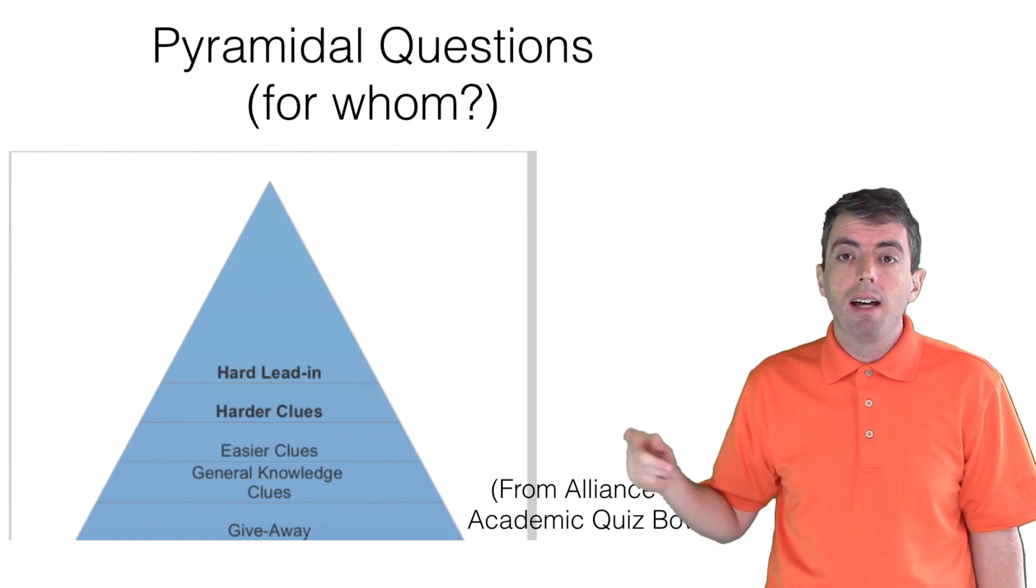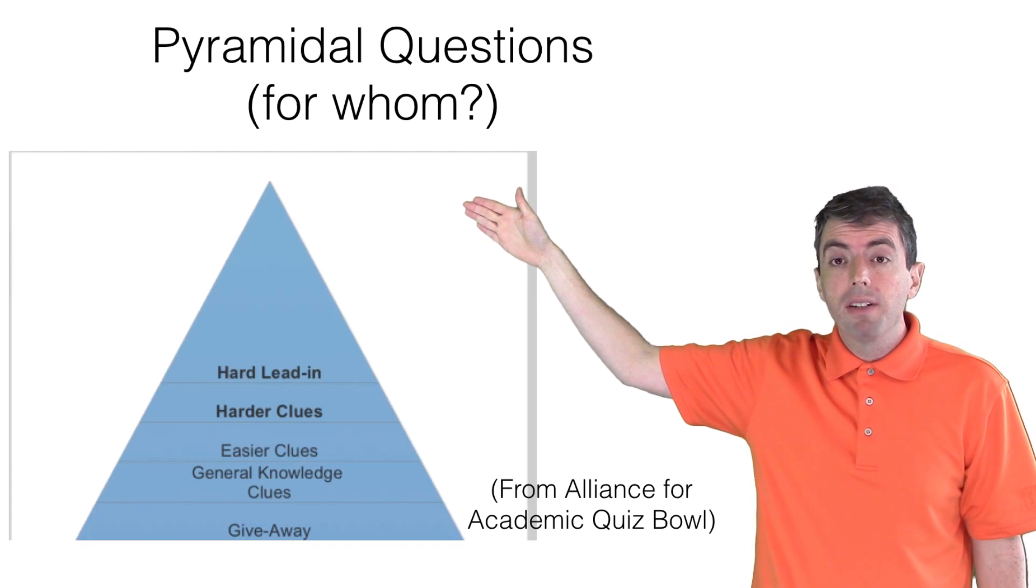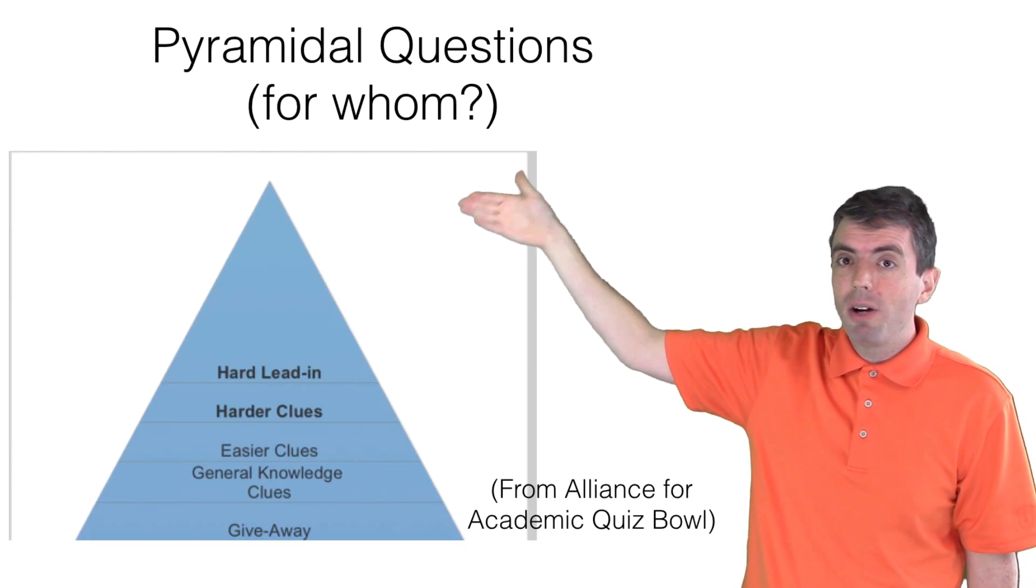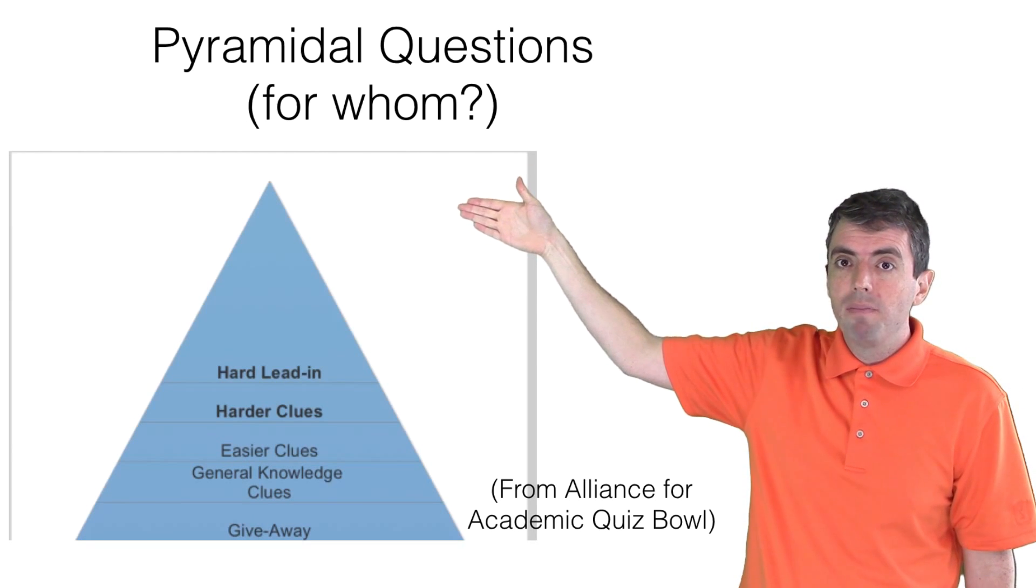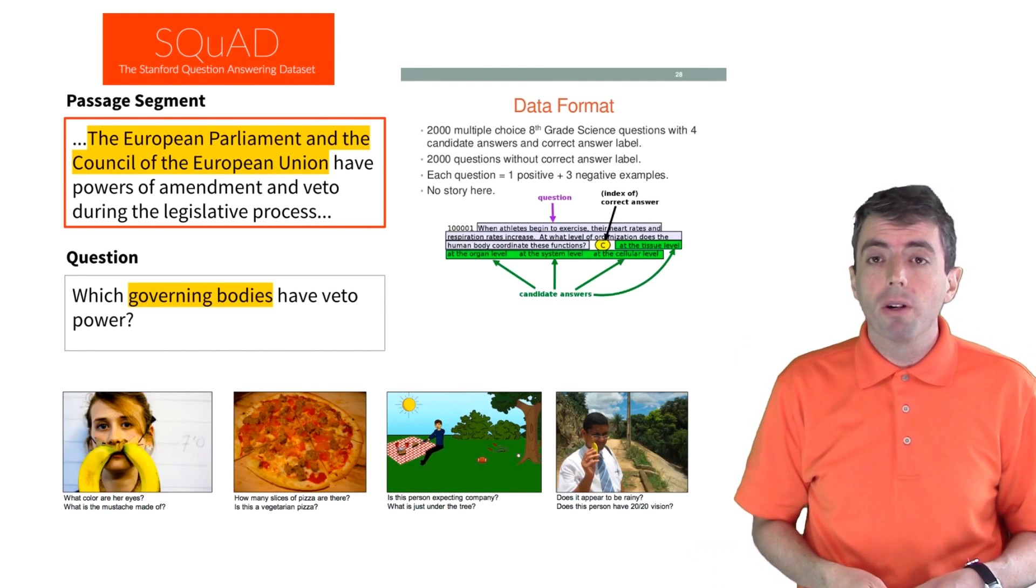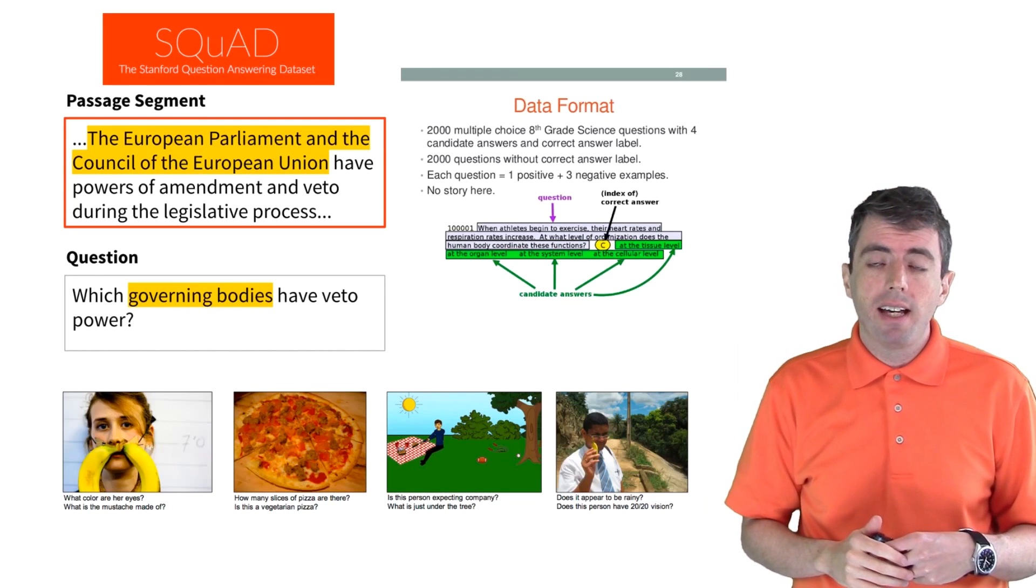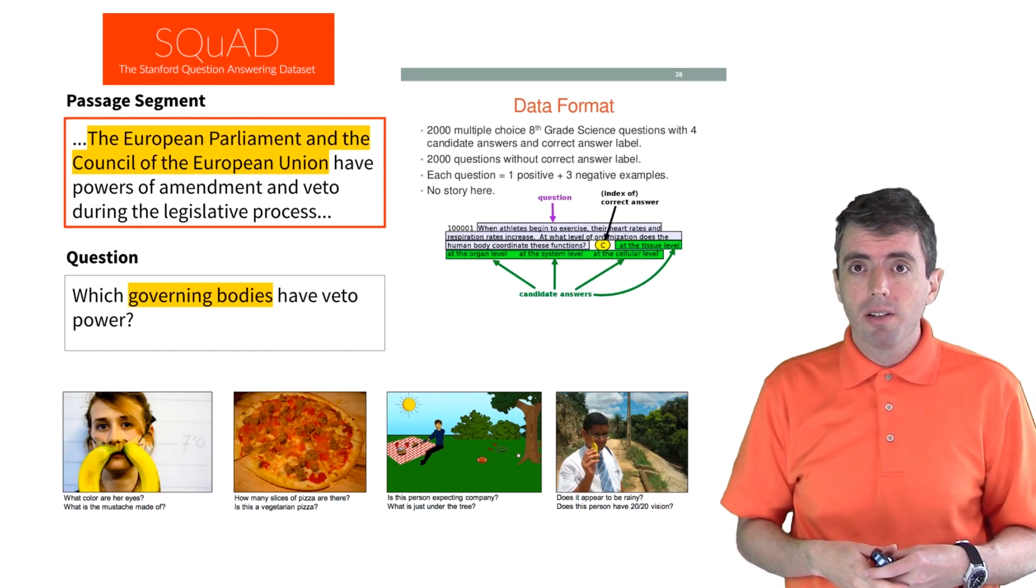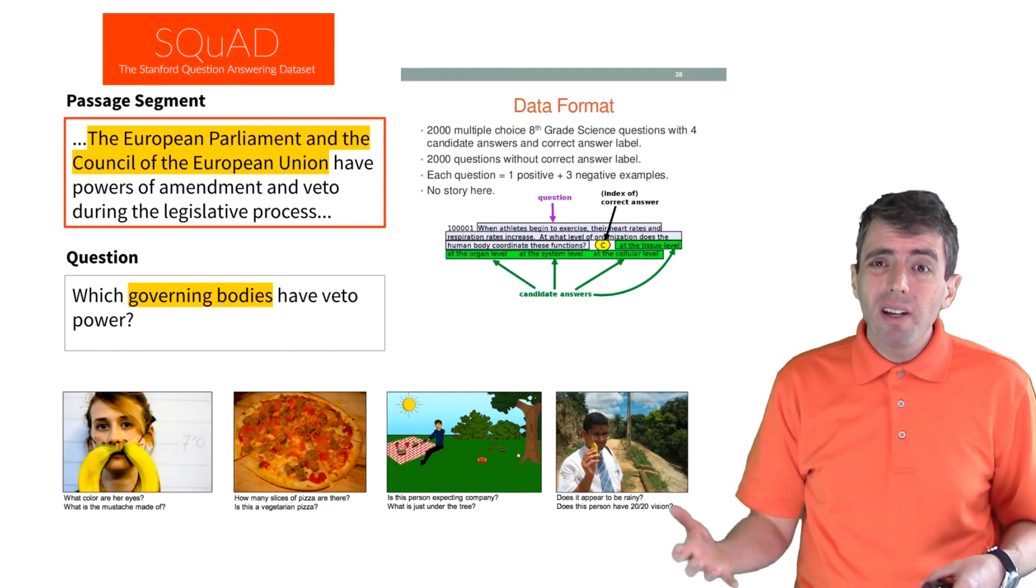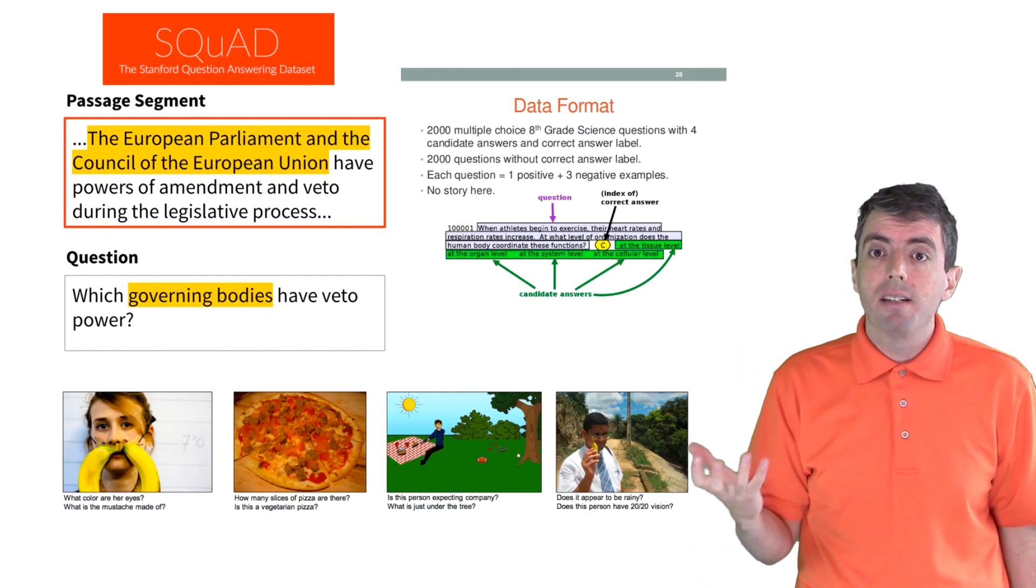And so oftentimes these difficult for a human clues appear at the beginning of a question. But they're easy for a computer, and so the computer can show off its ability to get those right while not really being all that smart. This is not just a problem for quiz bowl. Just about every other question answering data set that is being used in the machine learning and artificial intelligence community has this sort of problem. The questions are written by humans who don't necessarily try to challenge a computer.